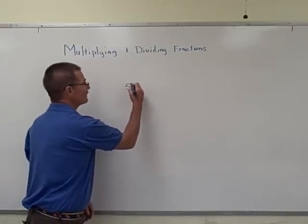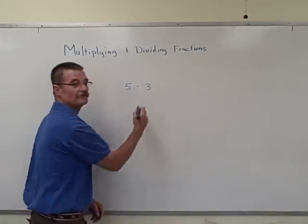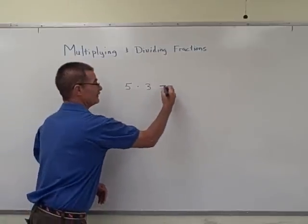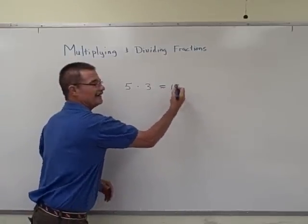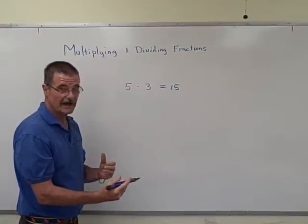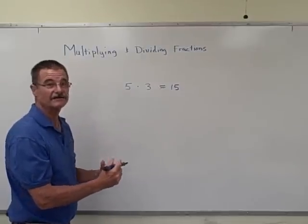Let's say you were going to multiply the number 5 times the number 3. You probably remember from your times tables that will give you the number 15. Well, it doesn't look like we had anything to do with fractions here, but in reality we really did.